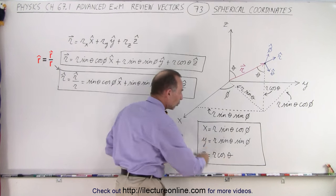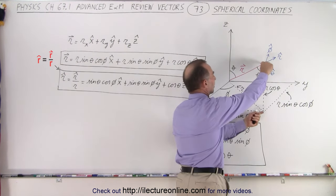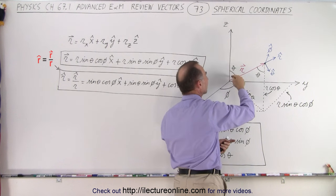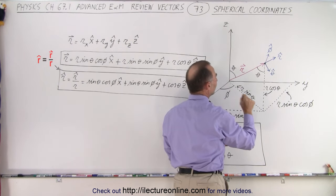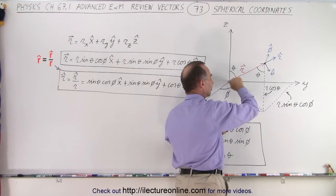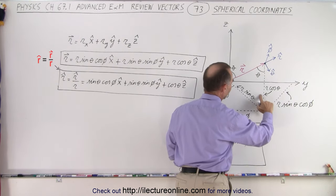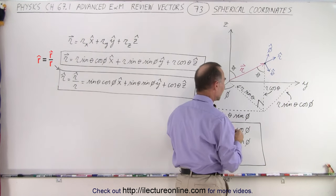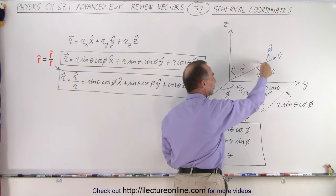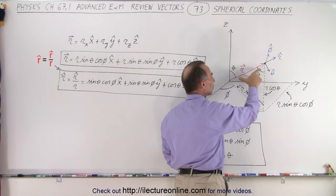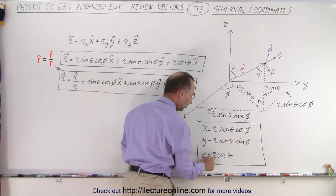Looking at where those equations come from: for z, notice that if this angle is theta, then the angle here must also be theta because this line is parallel to the z-axis — those are alternate interior angles. We have a right triangle where z is adjacent to the hypotenuse. So z equals the hypotenuse r times the cosine of theta: z = r·cos(θ).